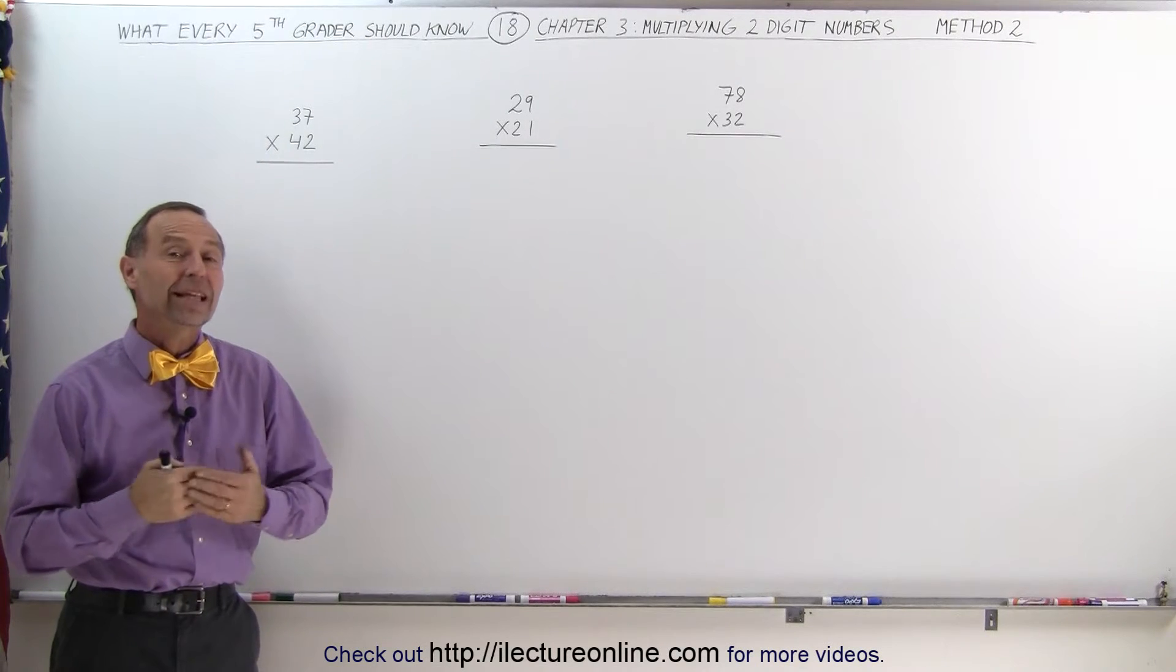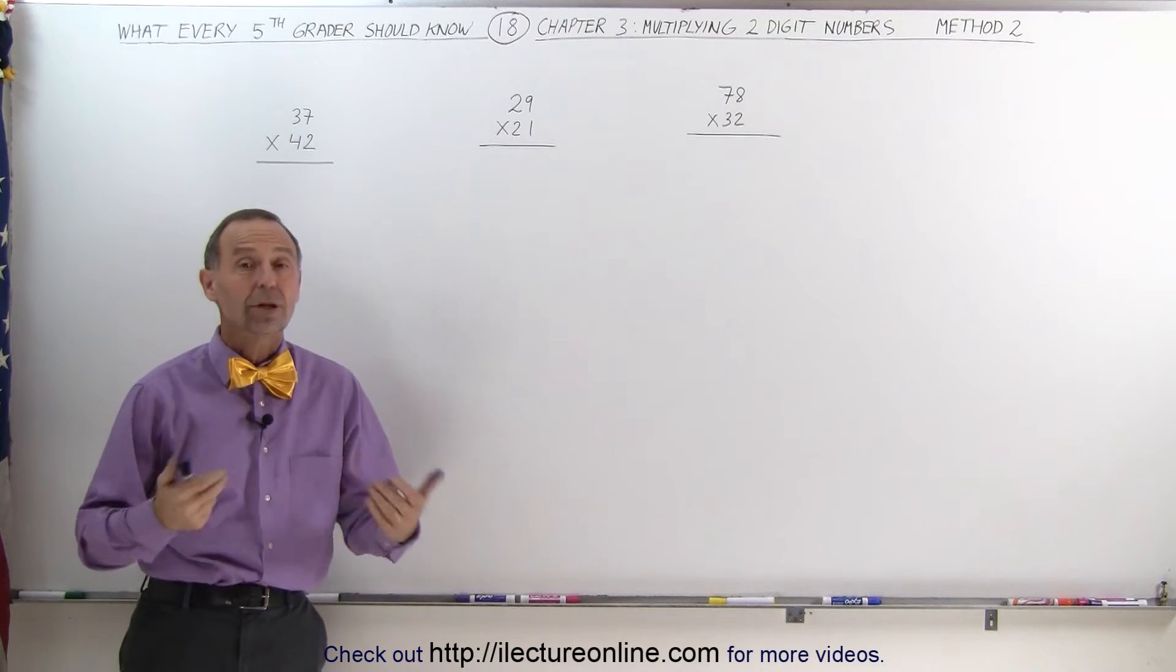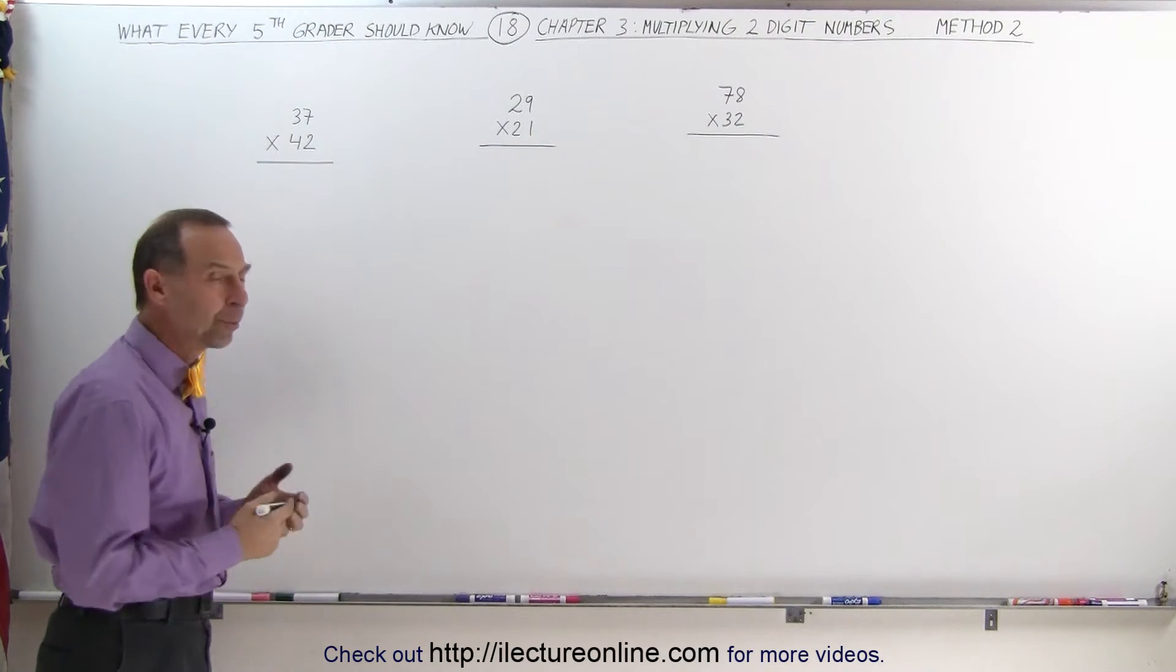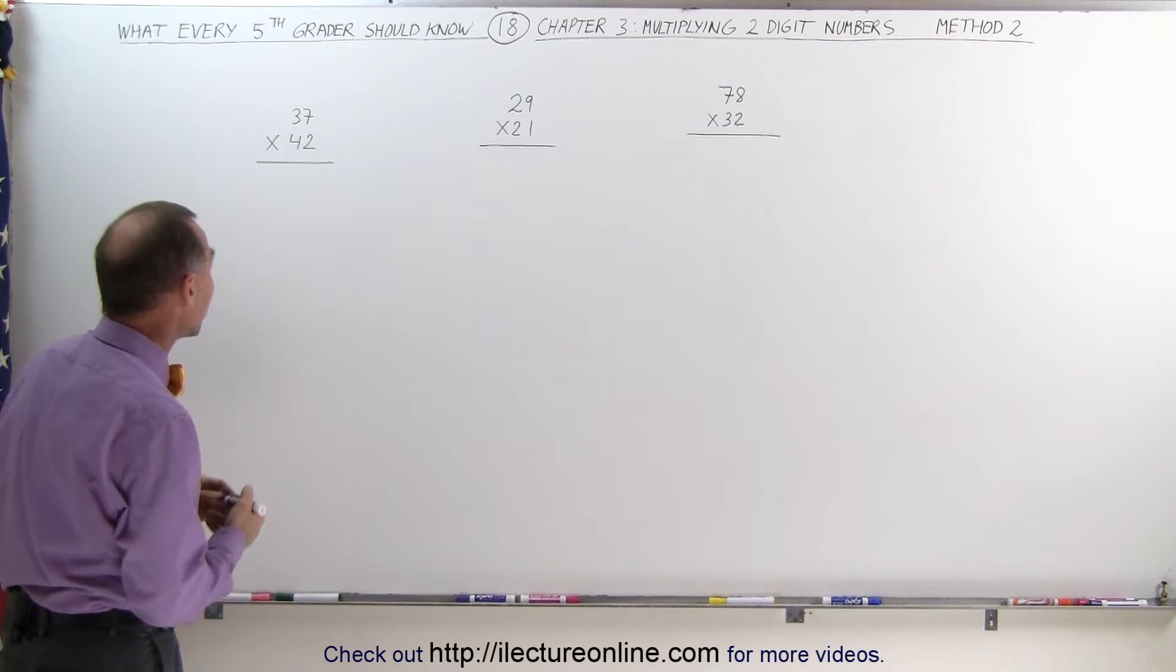Welcome to iLecture Online. Here we're going to take another look at how to multiply two two-digit numbers together. We call that Method 2. Before we show you how to do that, let's go ahead and work it out the old-fashioned way, simply through the longhand process.